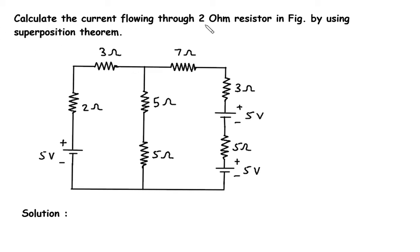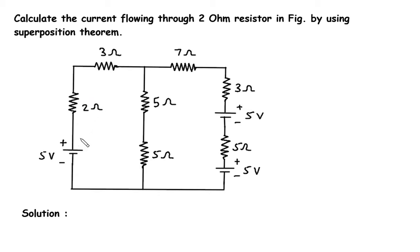Calculate the current flowing through the 2 ohm resistor in the figure by using the superposition theorem. In this circuit we have to find the current flowing through this 2 ohm resistor using superposition theorem.